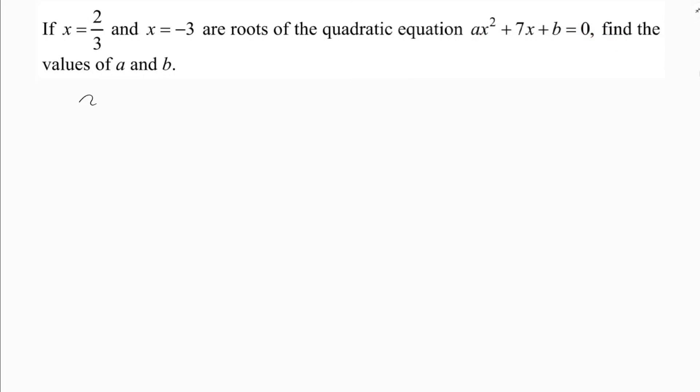Here, the quadratic equation is ax square plus 7x plus b equals 0. I write here 2 times because 2 roots are given. Ax square plus 7x plus b. So, x equals 2 by 3 and x equals minus 3.